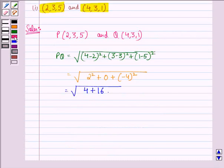Now, 4 plus 16 is 20. So, we have square root of 20. And this can be further written as 2 root 5 units. So, our answer to this question is that distance between (2, 3, 5) and (4, 3, 1) is 2 root 5.